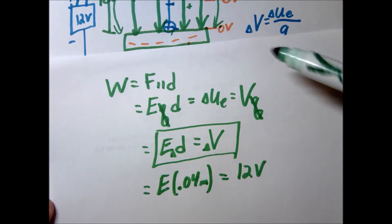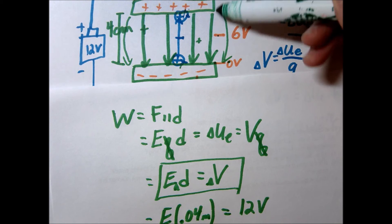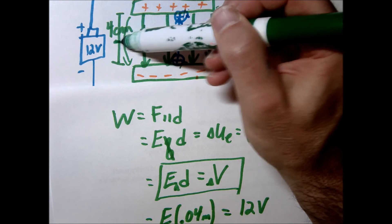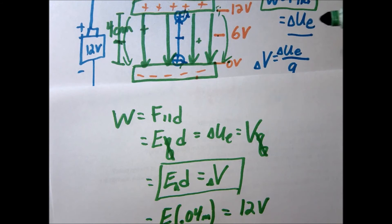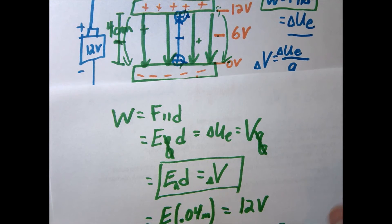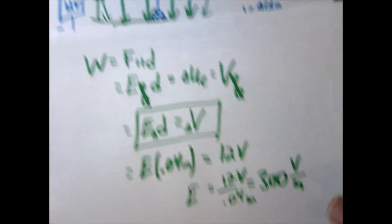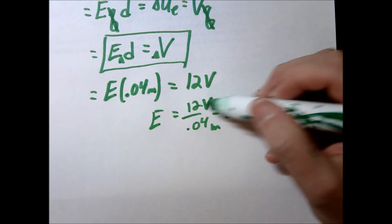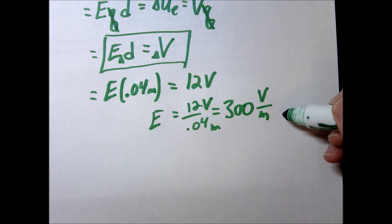I guess what I was trying to say earlier is, if we went from 6 to 12, that would be a change of 12, but then the distance we would use would just be this halfway distance, or 2 centimeters. And you would end up with the same value for E. E would be the same regardless. So we're going to get 12 divided by 0.04, and I believe that is 300. Notice the units here, we have volts per meter.